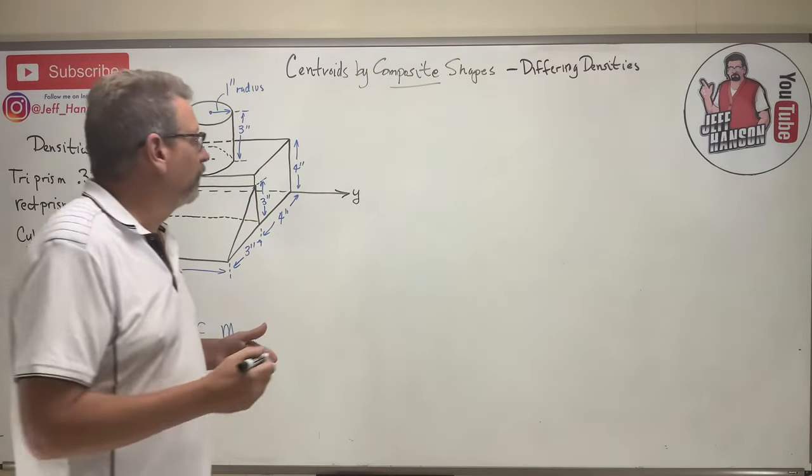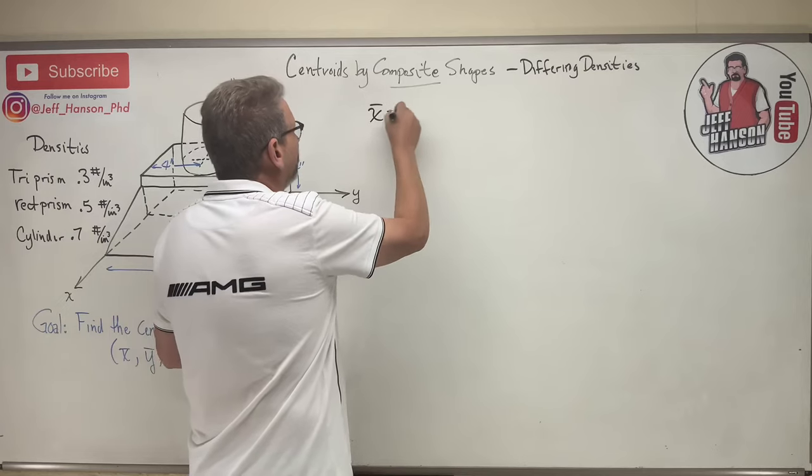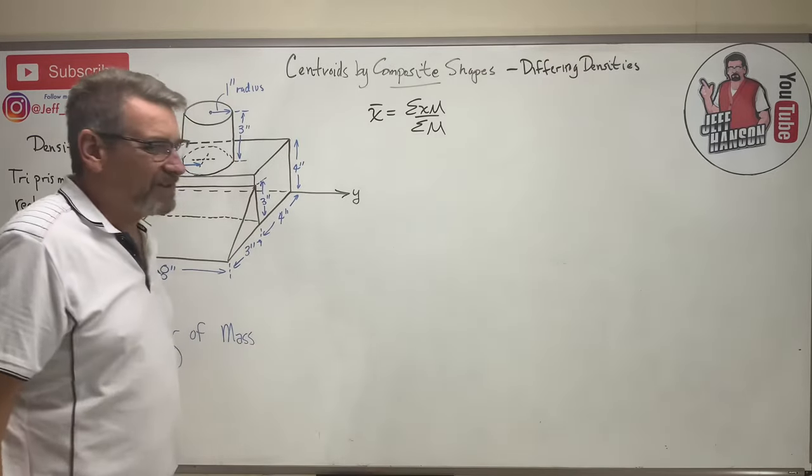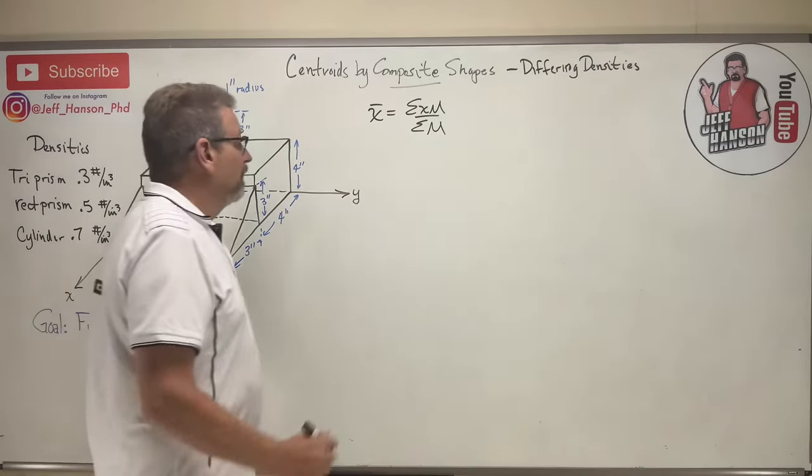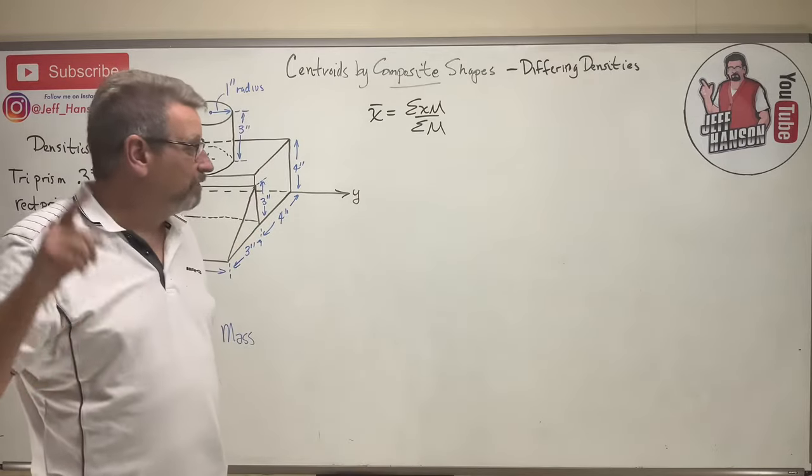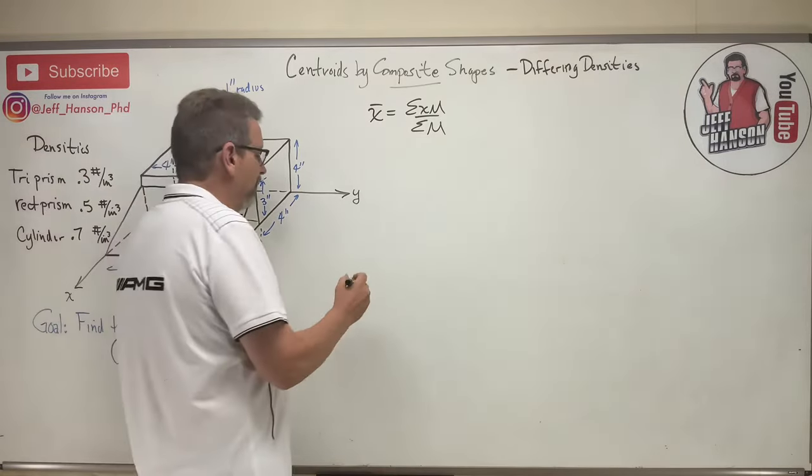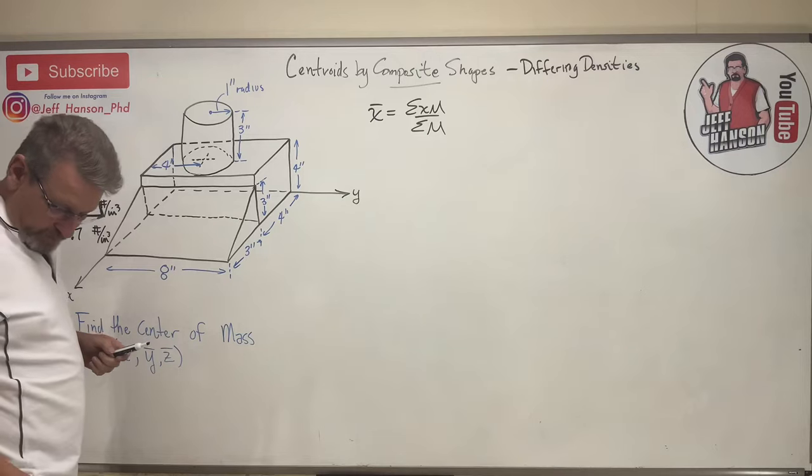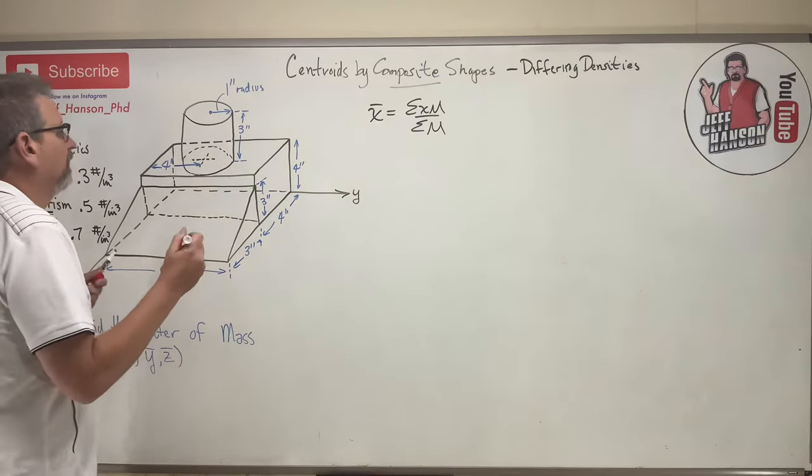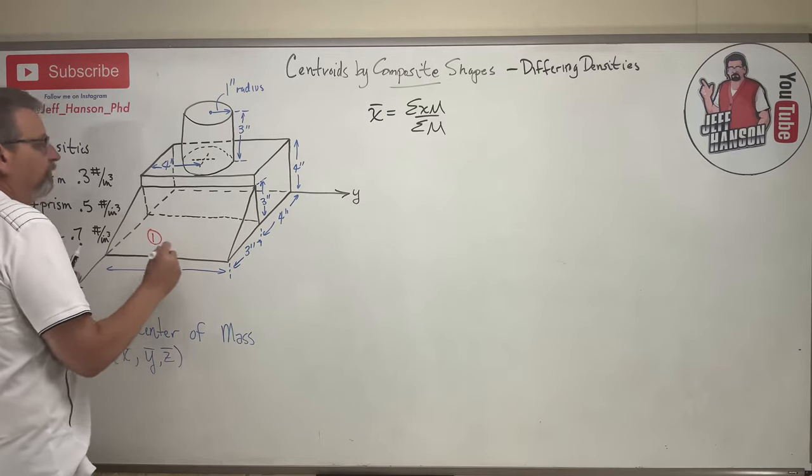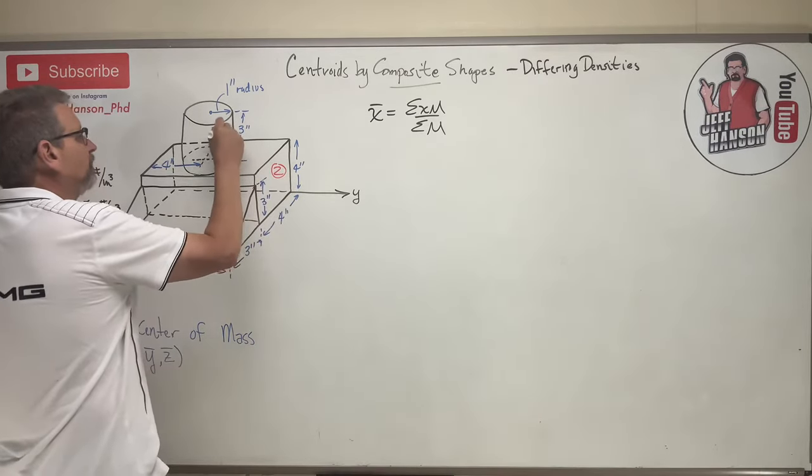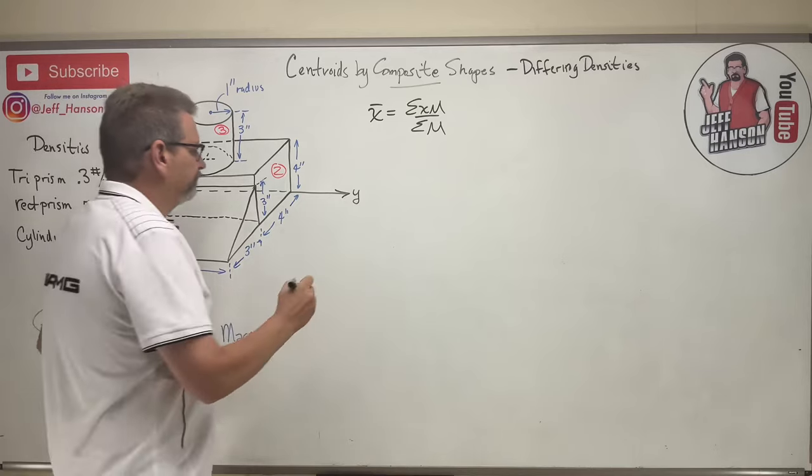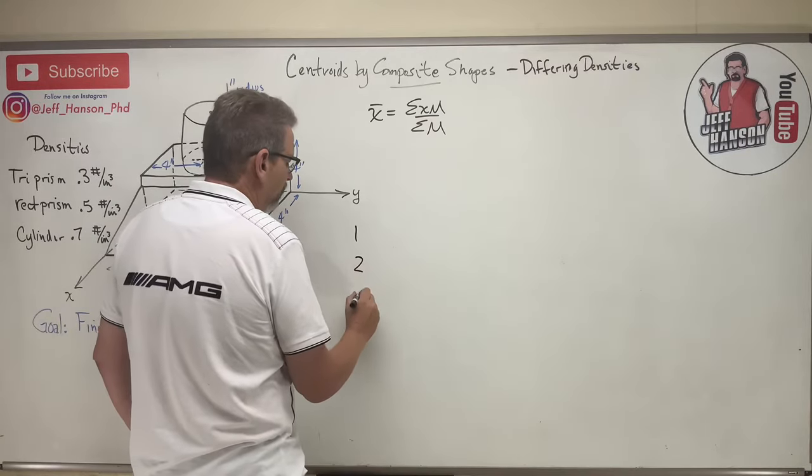We're going to use this equation this time: x bar is equal to the sum of x m over the sum of the m's. That's the kind of equation we're going to use for x, y and z, but we're still going to use our good old-fashioned table method to solve this. Let's divide this into some shapes. Shape one the triangle prism, shape two the rectangle, and then shape three will be the cylinder up on the top there. I've got three shapes, one two three.